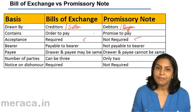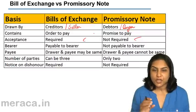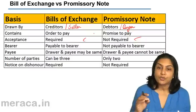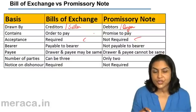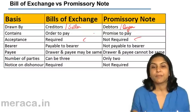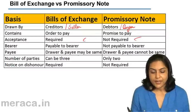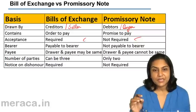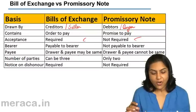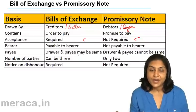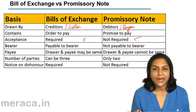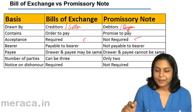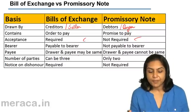A bill of exchange can be made payable to a bearer. The bill of exchange can contain an order to make payment to a certain person, to the order of that person, or to the bearer of the instrument. That means if there is an instruction to pay to the order of X or to the bearer of the instrument, any person who carries this instrument can collect payment. But a promissory note cannot be made payable to a bearer.